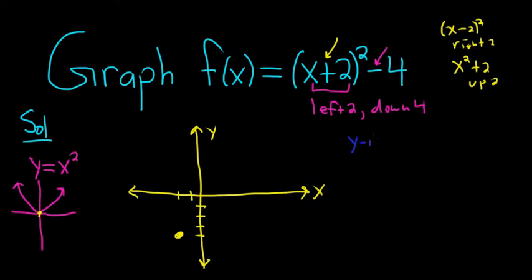So to find the y-intercept, you always plug in 0 for x. So f(0) is equal to (0 plus 2) squared minus 4. So 2 squared is 4, oh, how convenient, 4 minus 4 is 0. Good stuff. So that was a coincidence. So here it's going to cross here at 0, 0.